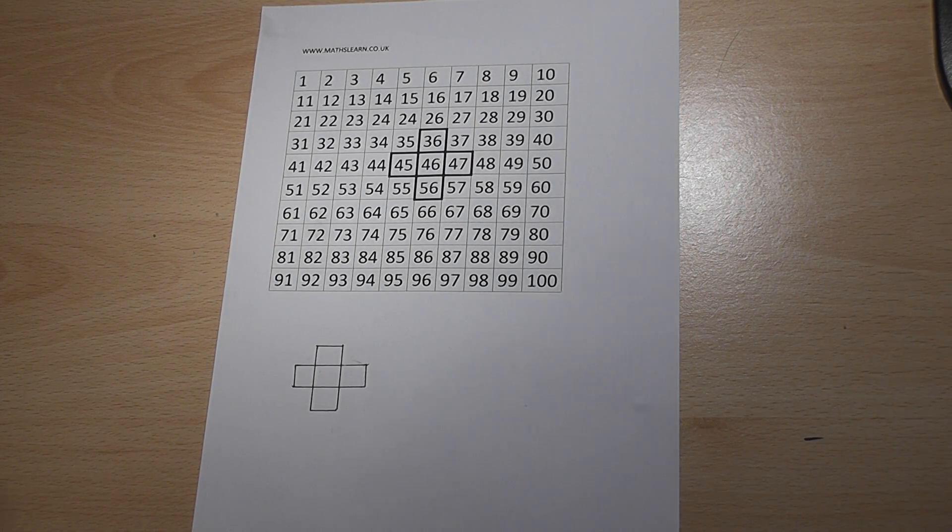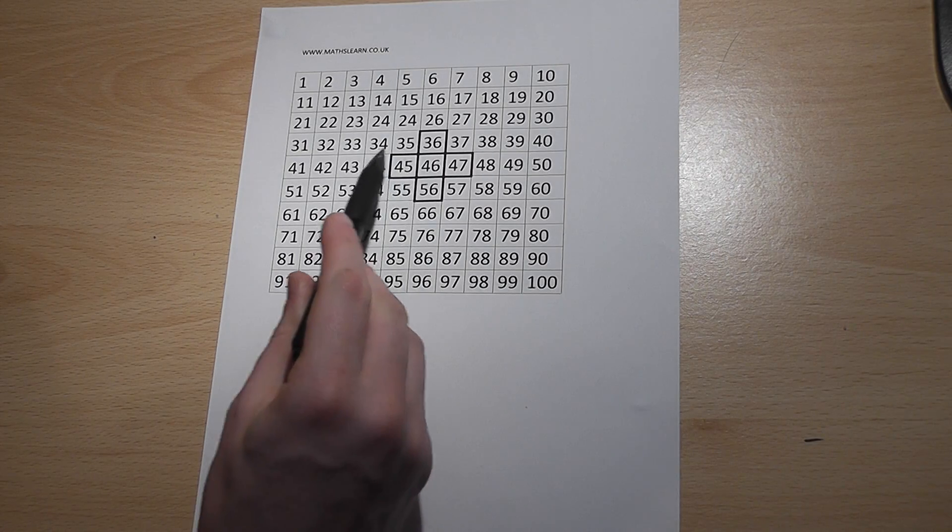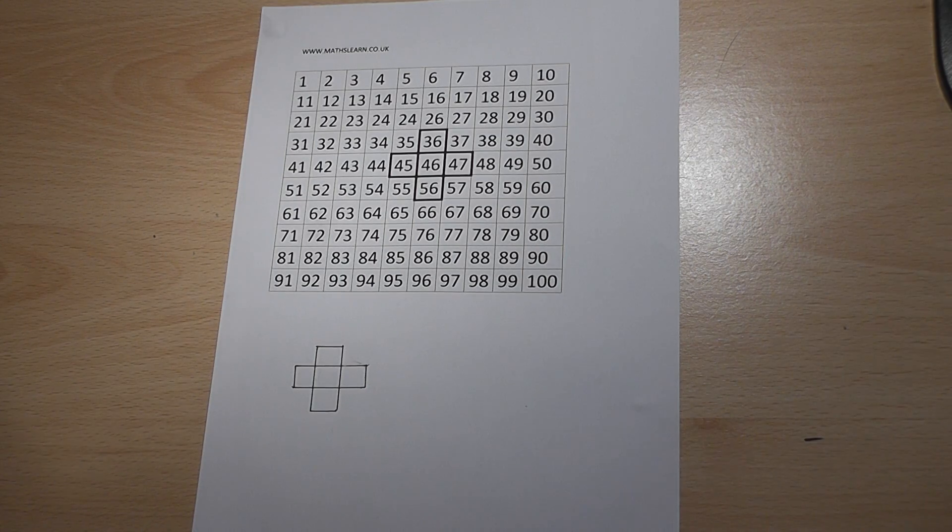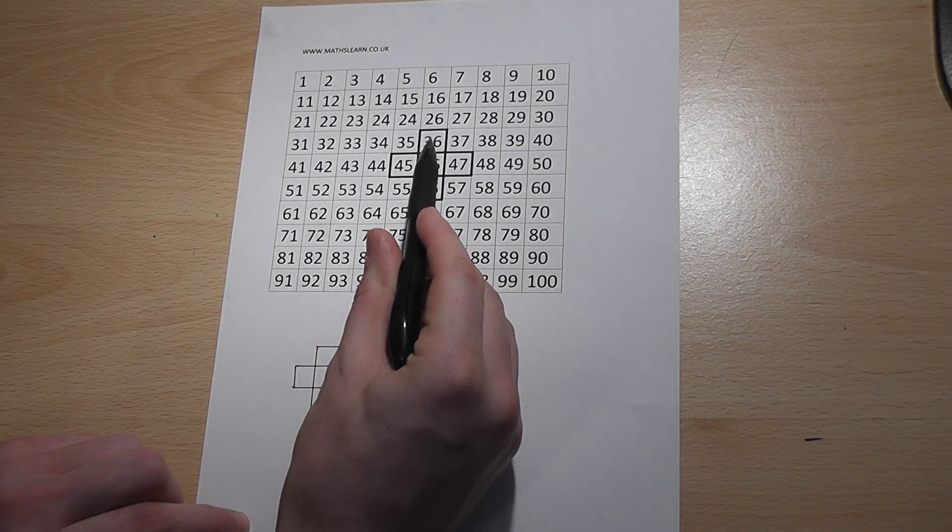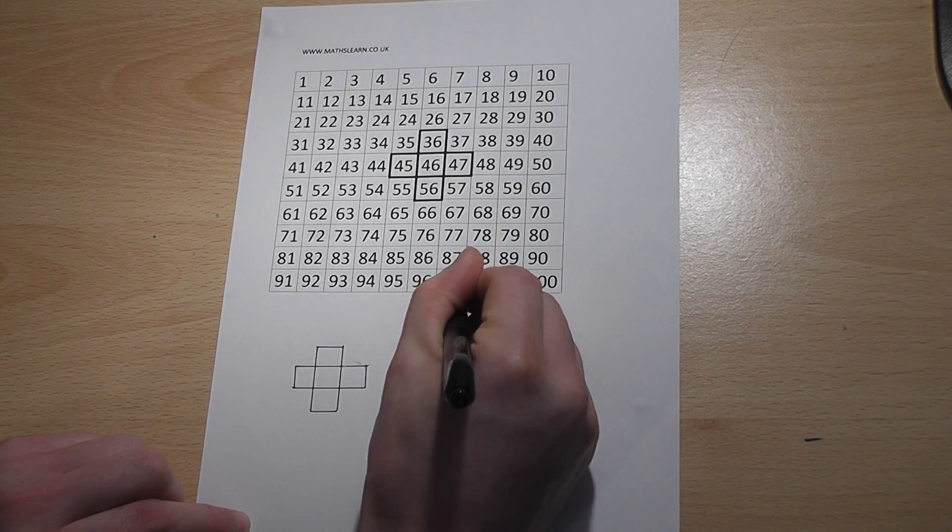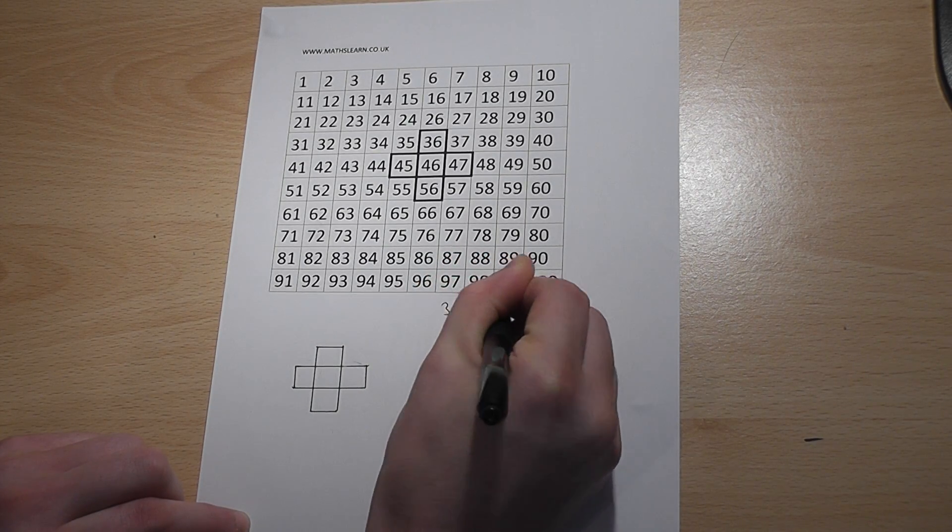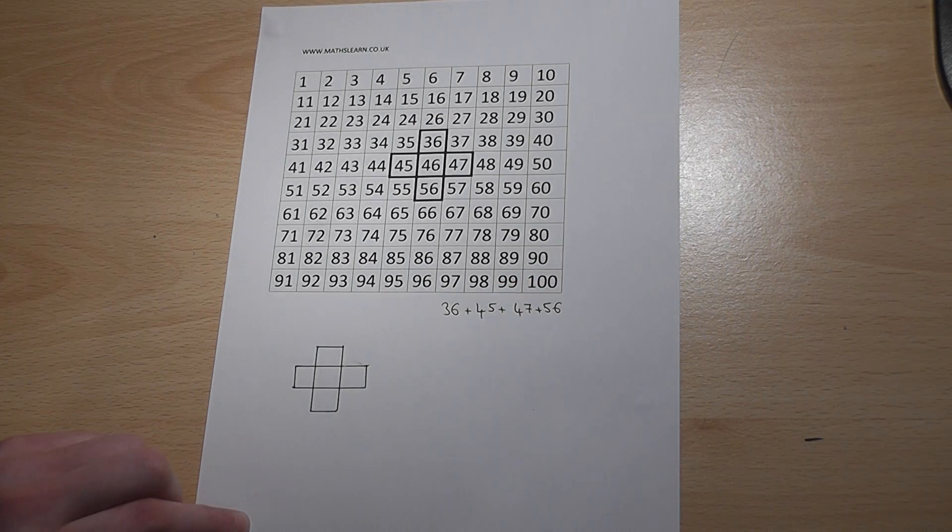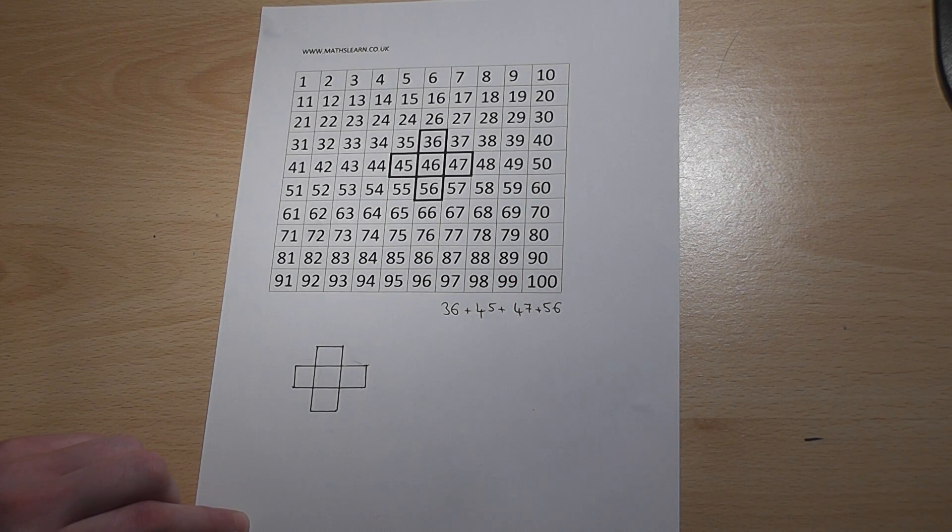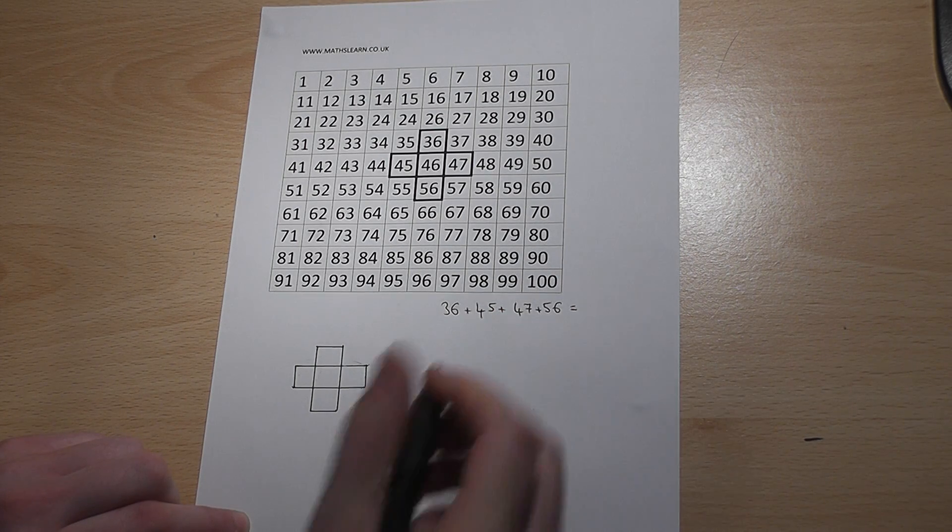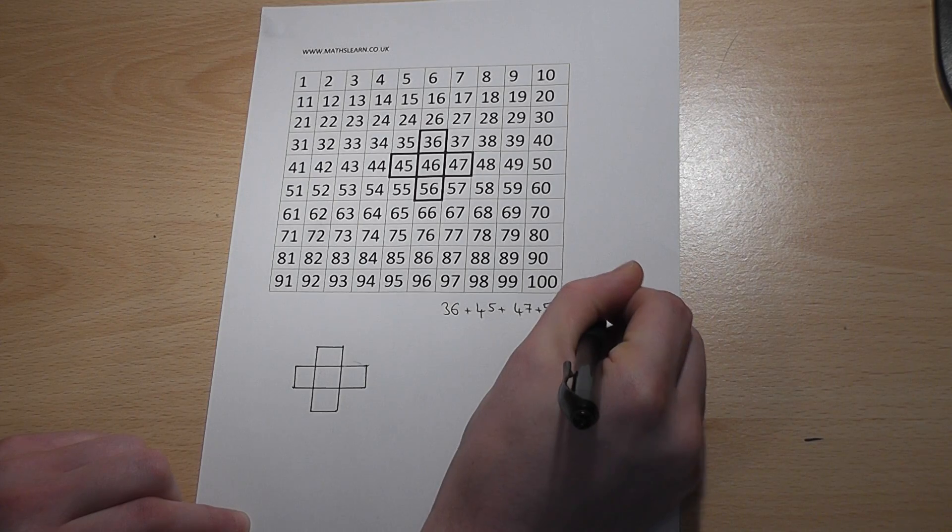Now if we look at this cross shape which I've drawn within the grid, and if we add up the four outer numbers in the grid, then the answer to that particular sum is 184.